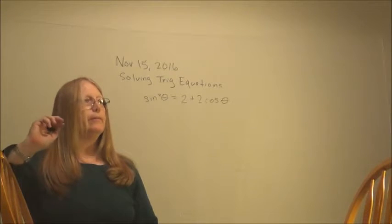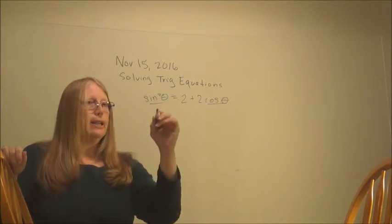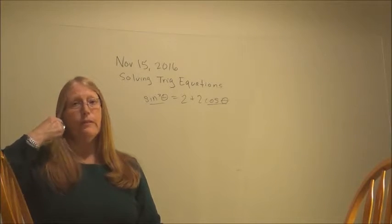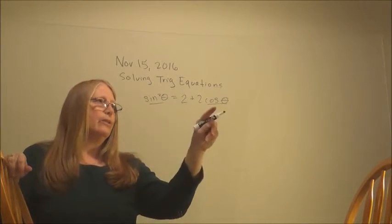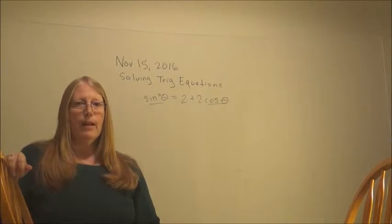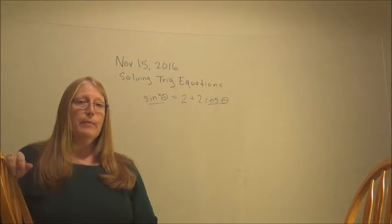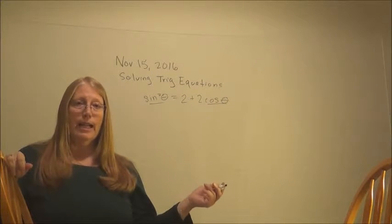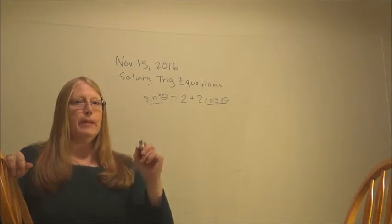Sine squared theta equals 2 plus 2 cosine theta. Alright. On this one we are going to see that we have a cosine and a sine. So we can't work in two different ones normally. So we're going to switch either sine to cosine or cosine to sine. Always replace the one that's squared. Now when it comes to memory work, you've already seen you're going to have to know the unit circle. So here is another bit of memory work.